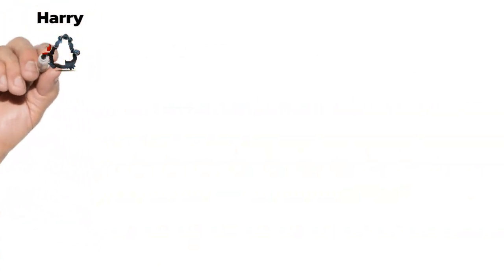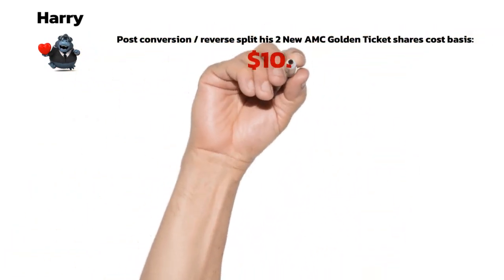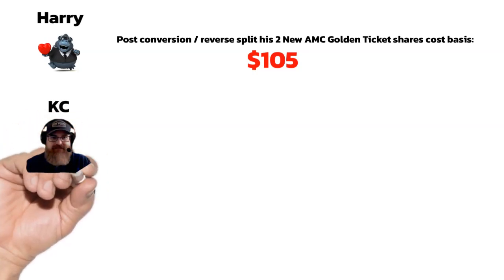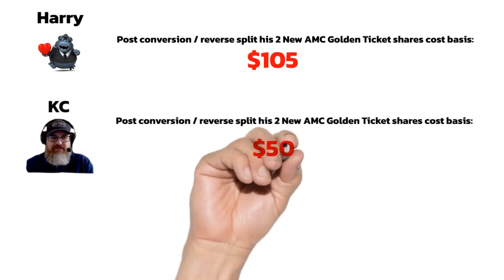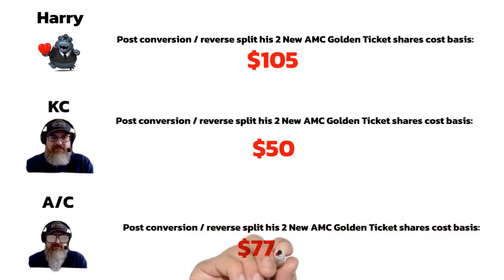Once the conversion and reverse split is complete, then price becomes important to know what your new portfolio balance is. So let's see how our imaginary traders did with their trades. Harry had an original cost basis of $105 for his initial 20 shares of the old AMC that were converted and reverse split into two new golden ticket AMC shares. KC had an original cost basis of $50 for his initial 20 shares of Ape that were converted and reverse split into two new golden ticket AMC shares. And AC had an original cost basis of $77.50 for his initial 10 shares of Ape that were converted and reverse split into two new golden ticket AMC shares.